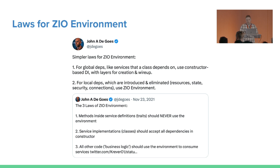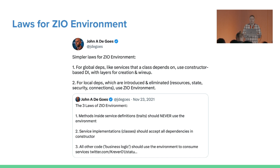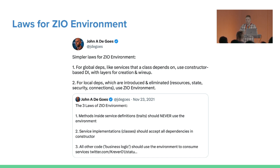It states two things. For global dependencies — things that can be shared between many different services, like your databases and other services — you should put them in constructor arguments and wire them with layers. For other things said to be local dependencies, which need to be introduced and eliminated, you should use the ZIO environment. The rest of this short talk will show some of these things that are considered local dependencies and why it's actually useful to put them in R.